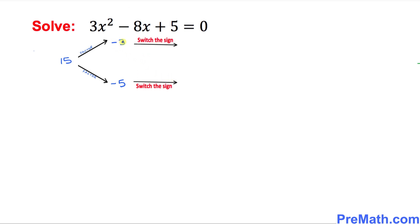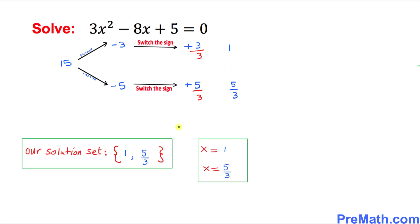The factors are going to be negative 3 and negative 5. In the next step, we are going to switch the sign of these factors. So negative 3 becomes positive 3, and negative 5 becomes positive 5. Our final step is to look at the leading coefficient, which is positive 3, and divide both numbers by it. So 3 over 3 gives us 1, and 5 over 3 stays as positive 5 over 3. Our solution set is 1 and 5 over 3.